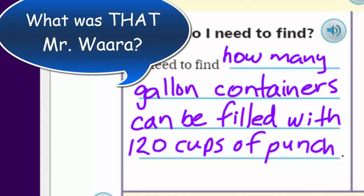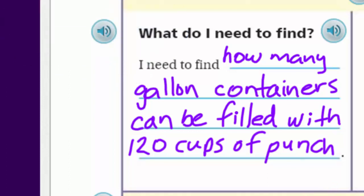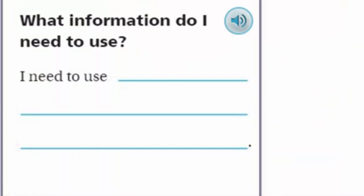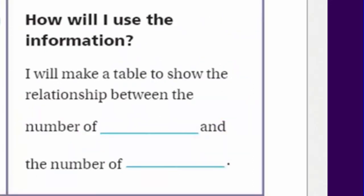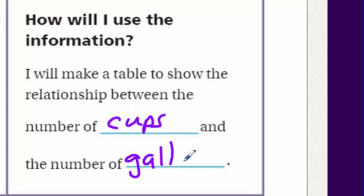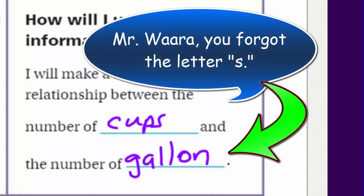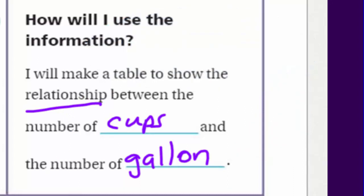That's the information we need to find. Now, what information do I need to use? We have two different units of measure: cups and gallons. We need to know the number of cups being made — that's 120 — and the number of cups in one gallon. How will I use the information? I will make a table to show the relationship between the number of cups and the number of gallons. I like that word 'relationship' — it suggests how they're related to each other.